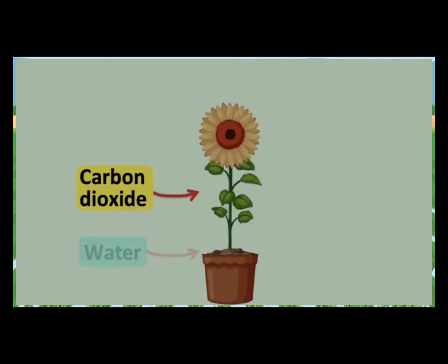Firstly, carbon dioxide and water enter the leaf. Carbon dioxide enters through the stomata of the leaf via diffusion. Water is absorbed by the roots from the soil. This water is then transported to the leaves by the xylem vessels.